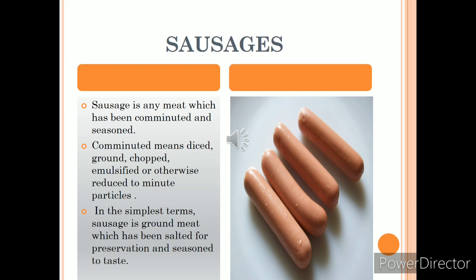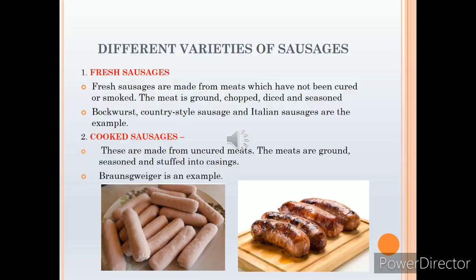Now we will talk about the different types of sausages available commercially in the market. We have fresh sausages — in a fresh sausage the meat is not cured, neither is it smoked; the meat is ground, chopped, diced and seasoned, and then put inside the casing. Bockwurst is an example of a fresh sausage. Then we have cooked sausage — in a cooked sausage the meat is uncured; the meat is ground, seasoned and stuffed into the casing.